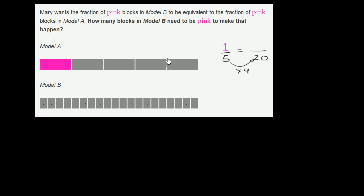And you even see it here. If we were to just draw a line right down here, you see that for every block in Model A, you have one, two, three, four blocks in Model B.